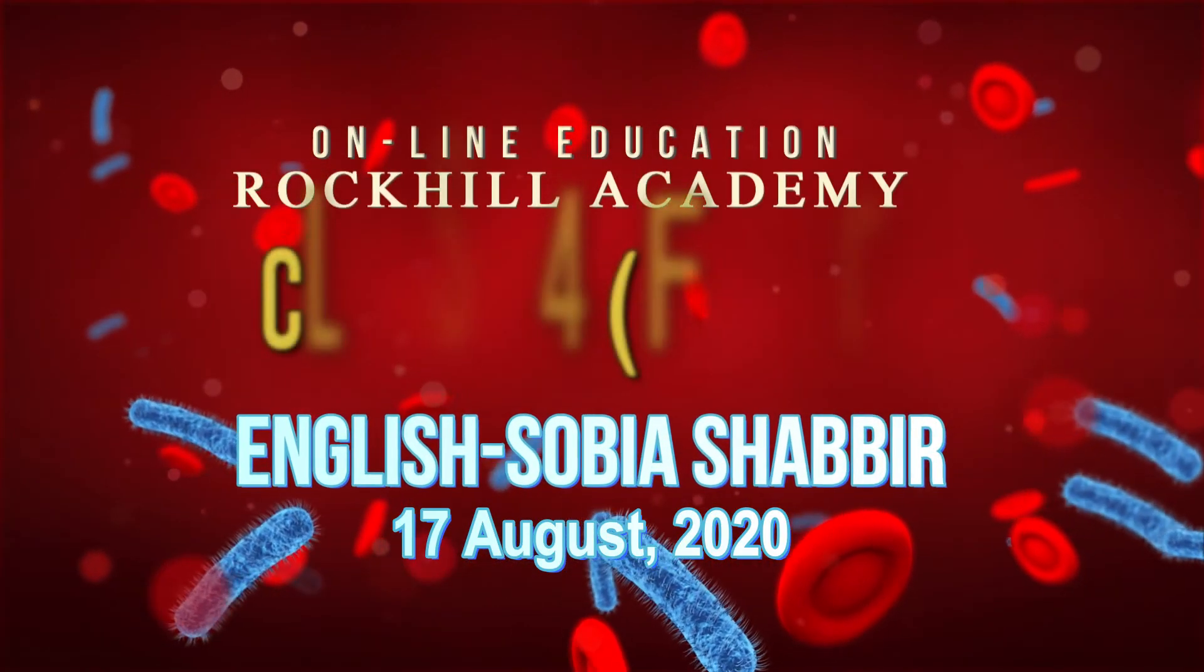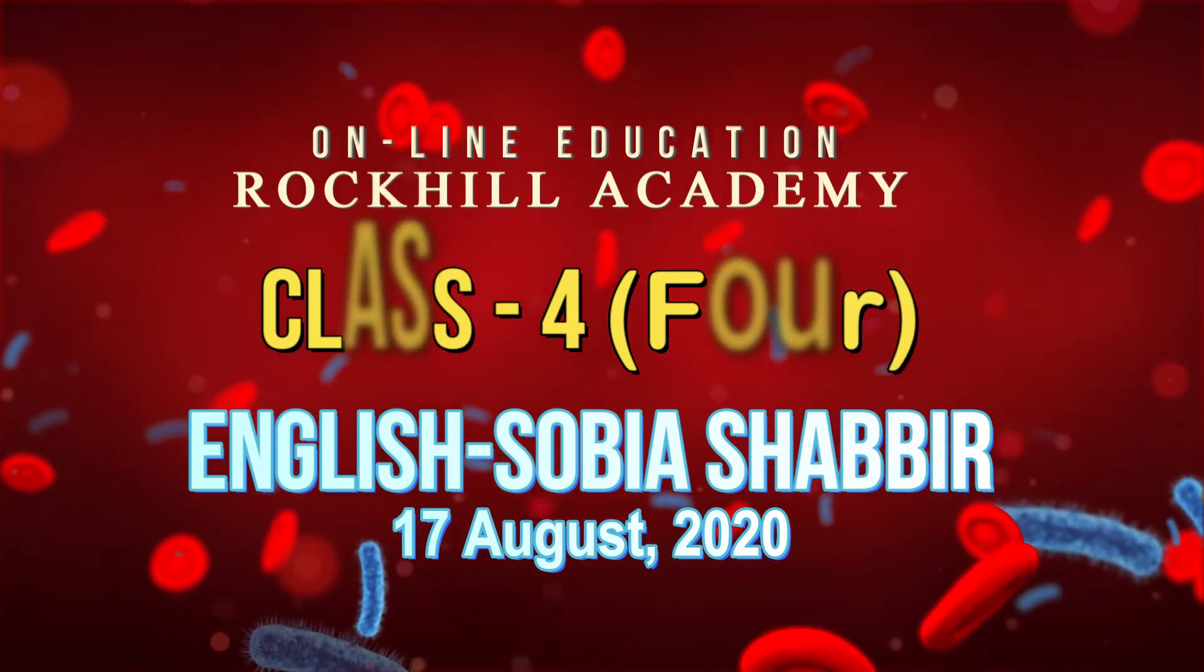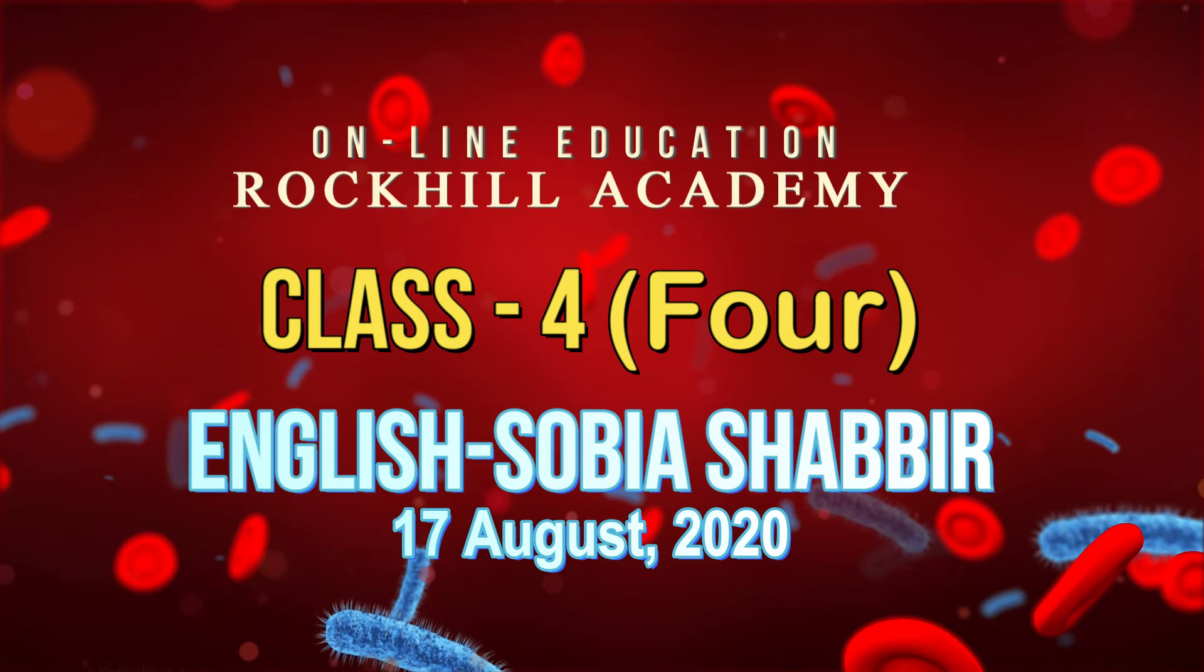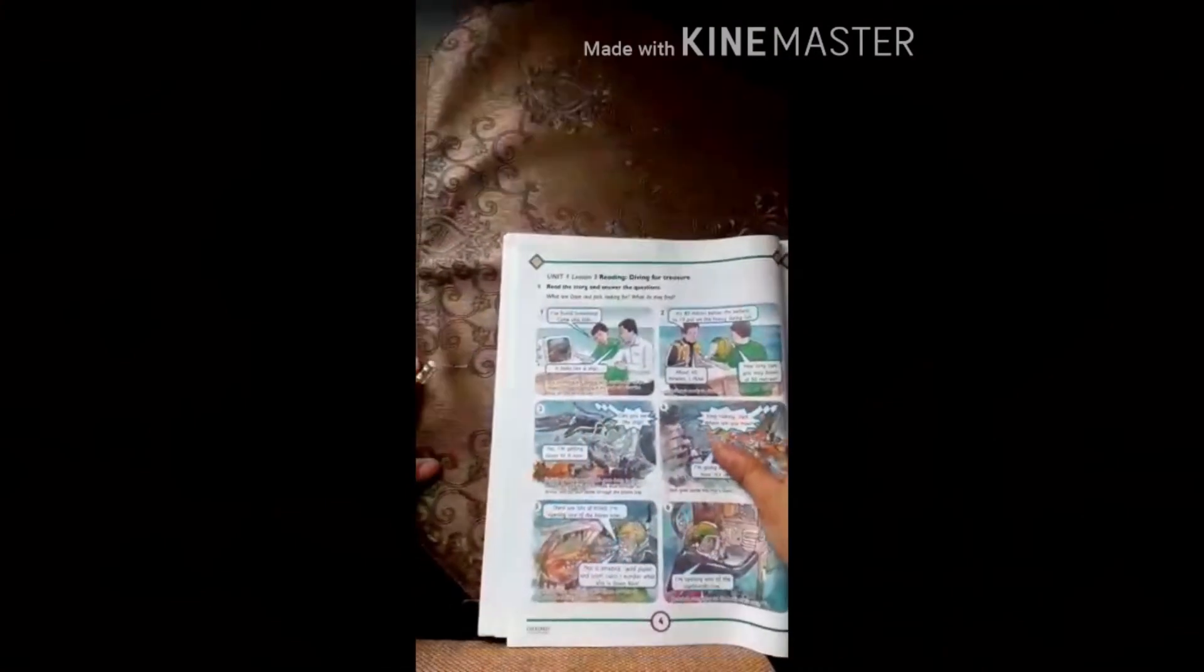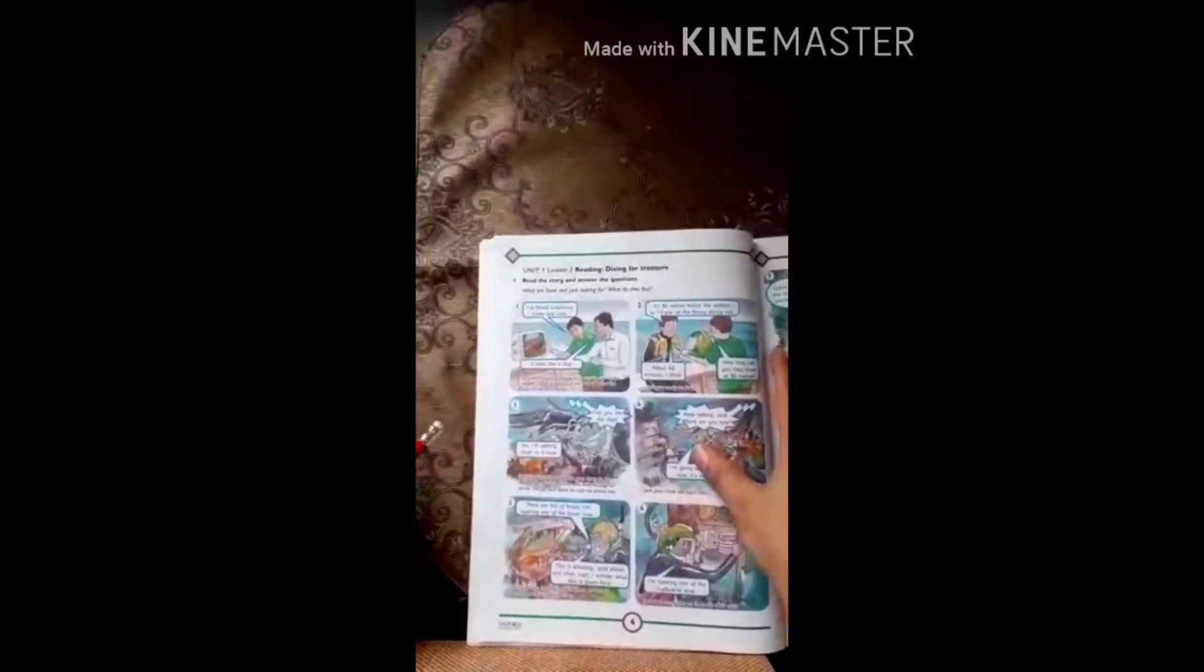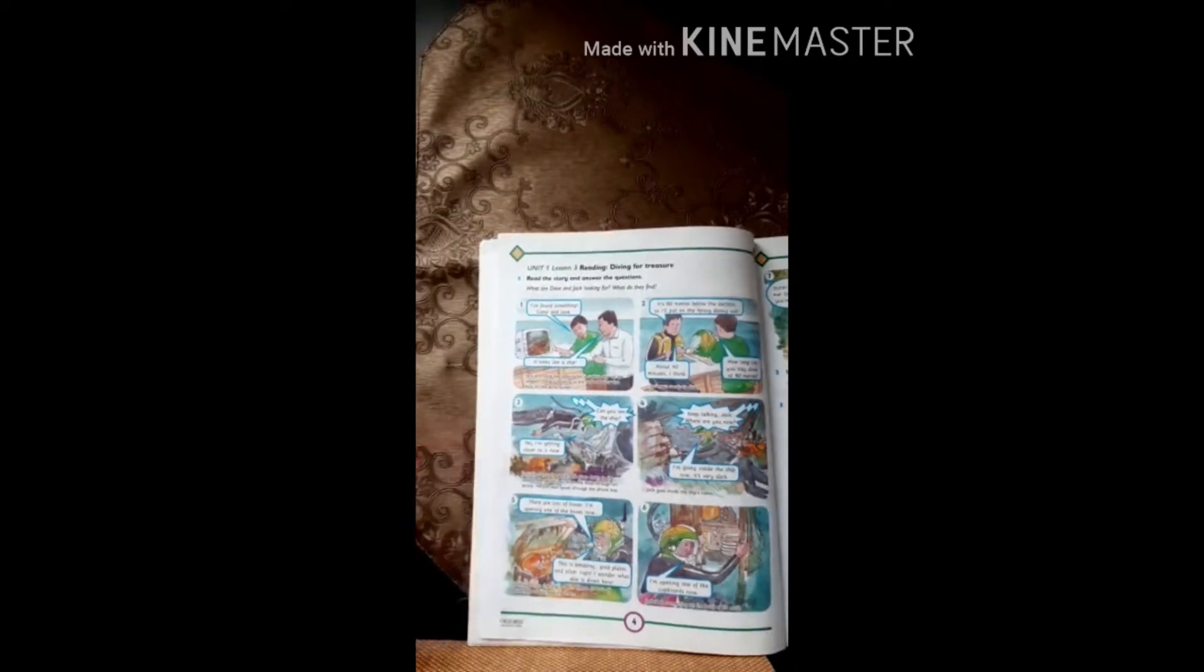And you will be enjoying your holidays also. Now it's our English next lesson, Class 4 Oxford Progressive English. Our book name is Oxford Progressive English and today our unit number one, lesson number three, and topic name is Reading: Diving for Prayer.